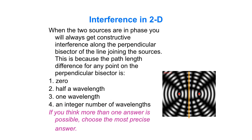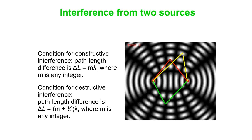If two sources are in phase, you always get constructive interference along the perpendicular bisector — the line equidistant from both sources. You always get constructive interference along that line because the path length difference, the distance from one source minus the distance to the other, for any point on that line is zero. In general, you get constructive interference when the path length difference is an integer number of wavelengths, and destructive interference when it's an integer plus a half number of wavelengths.